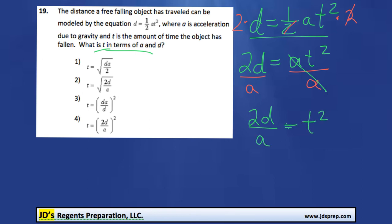Now for the final step, to completely get t by itself, we have to get rid of the squared. The opposite of squaring a number is to square root it, so we're going to square root both sides. And then we'll end up getting that t is equal to the square root of 2d over a.